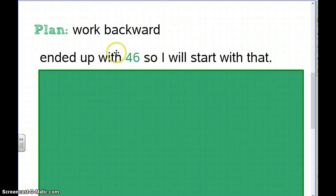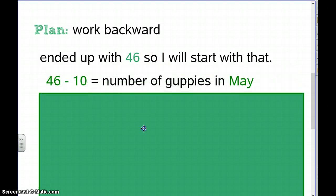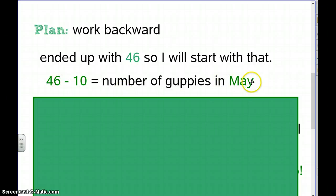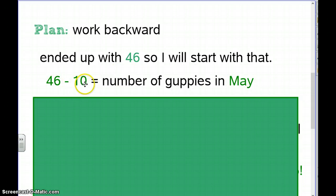He ended up with 46 in June — that's the number I'll start with. May is the month before June, and in June he had ten more, so he had ten less in May. That means 46 minus 10 gives us the number of guppies in May.